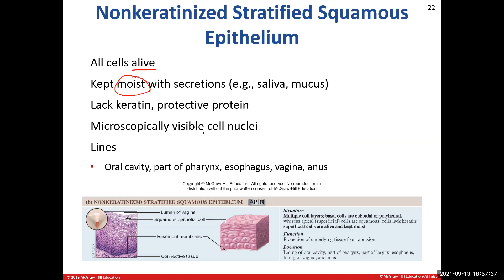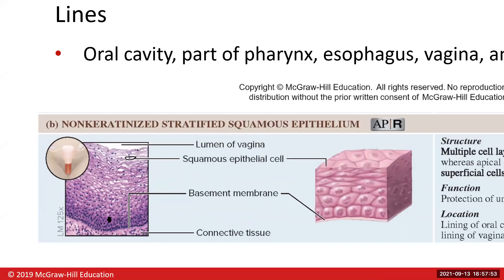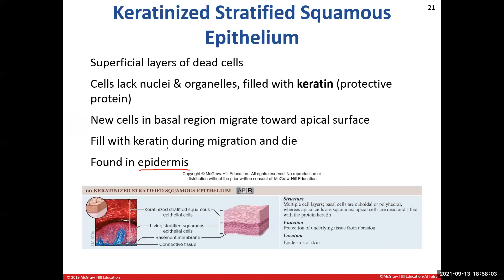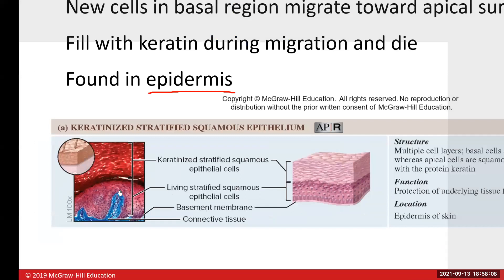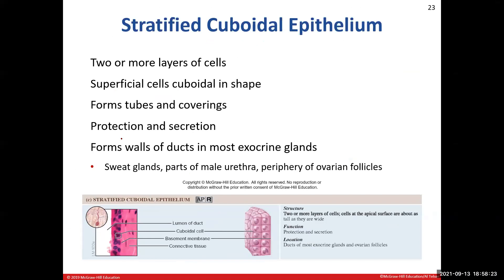When looking at non-keratinized stratified squamous epithelium, you can see the nuclei — little black dots — all the way up in the top layer. In the keratinized type, you don't see any nuclei up in the top layer. The atlas image shows this better than the current slide.